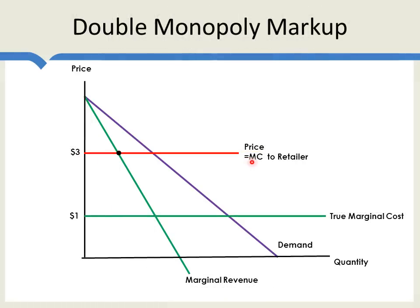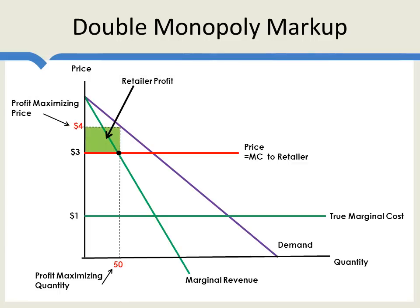Now we know the price set by the wholesaler, which is equal to the marginal cost from the point of view of the retailer. The retailer will choose the price and quantity such that marginal revenue equals its marginal cost. Therefore, it will choose a profit-maximizing quantity of 50 and a profit-maximizing price of $4. This gives us the retailer's profit. Notice that the retailer's profit is much lower than before — some of that profit has been gobbled up by the wholesaler. However, the total amount of profit is now less than when the retailer was buying from a competitive industry, because the retailer could have set a price of $4 before but chose not to — its profit-maximizing price was $3. So the total profit has actually fallen.